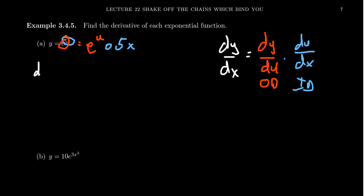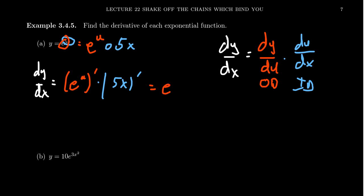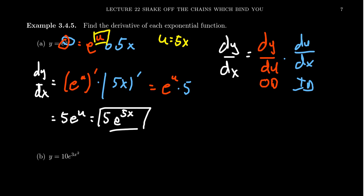Calculating the derivative dy over dx, we take the outer derivative first — the derivative of e to the u — which gives us e to the u. Then we multiply by the inner derivative of 5x. The derivative of the natural exponential is itself, so the derivative of e to the u is e to the u. The derivative of 5x with respect to x is 5. So we get 5e to the u. Since u is just 5x, the final derivative is 5 times e to the 5x.